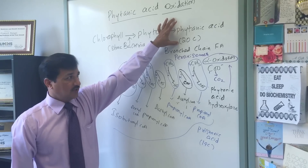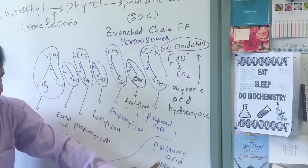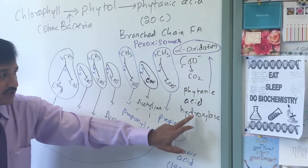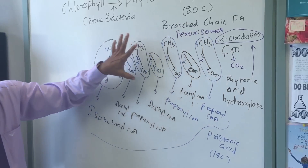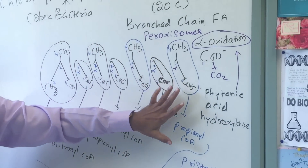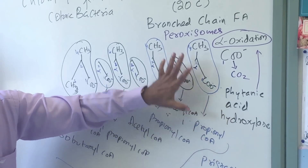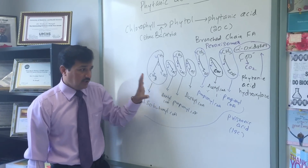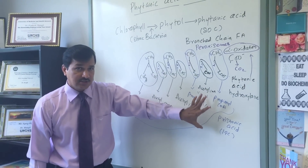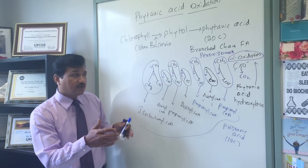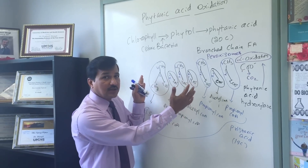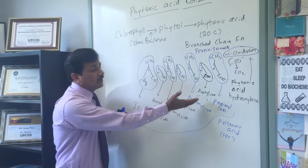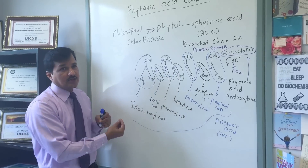So the 20-carbon phytanic acid is initially converted into pristanic acid (19-carbon) and one carbon is released as carbon dioxide — that is done by alpha oxidation initiated by phytanic acid hydroxylase. The 19-carbon branched chain pristanic acid will then undergo beta oxidation: initially in the peroxisome, and once the chain length reaches 10 carbons, it will be taken into the mitochondrial matrix where the same regular beta oxidation continues.